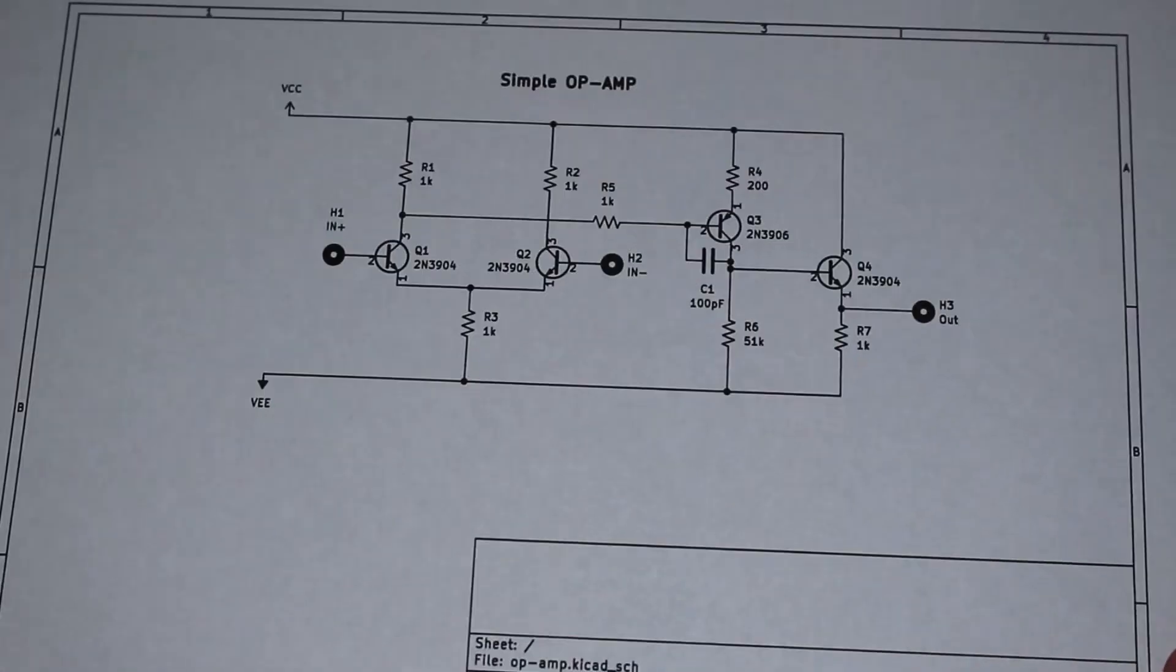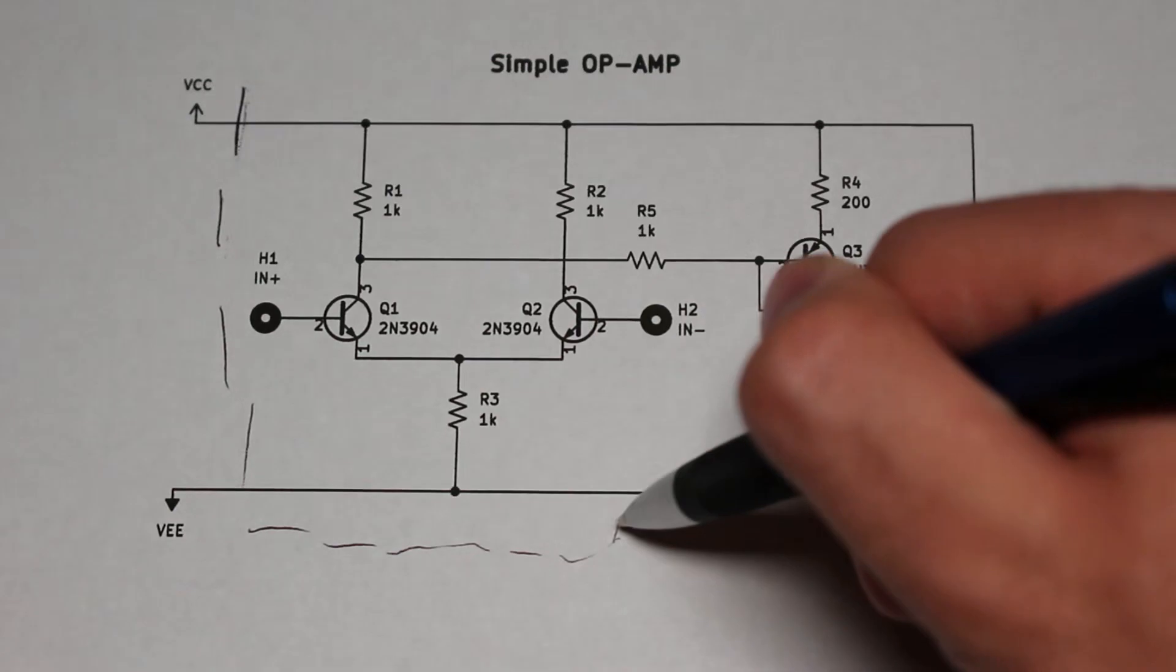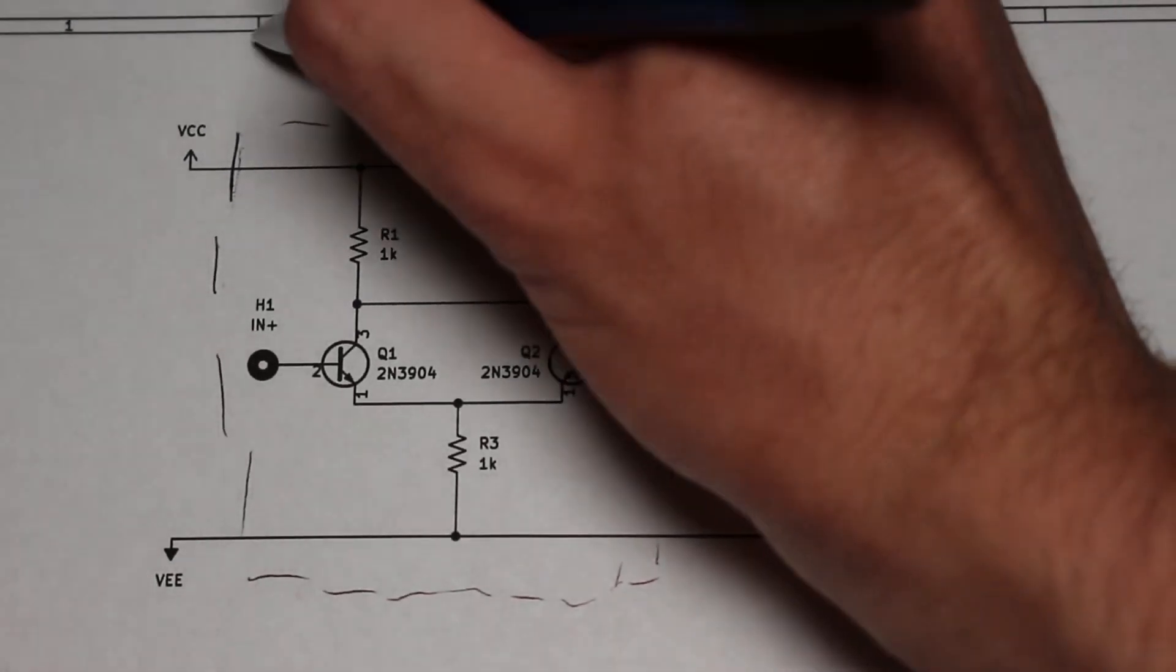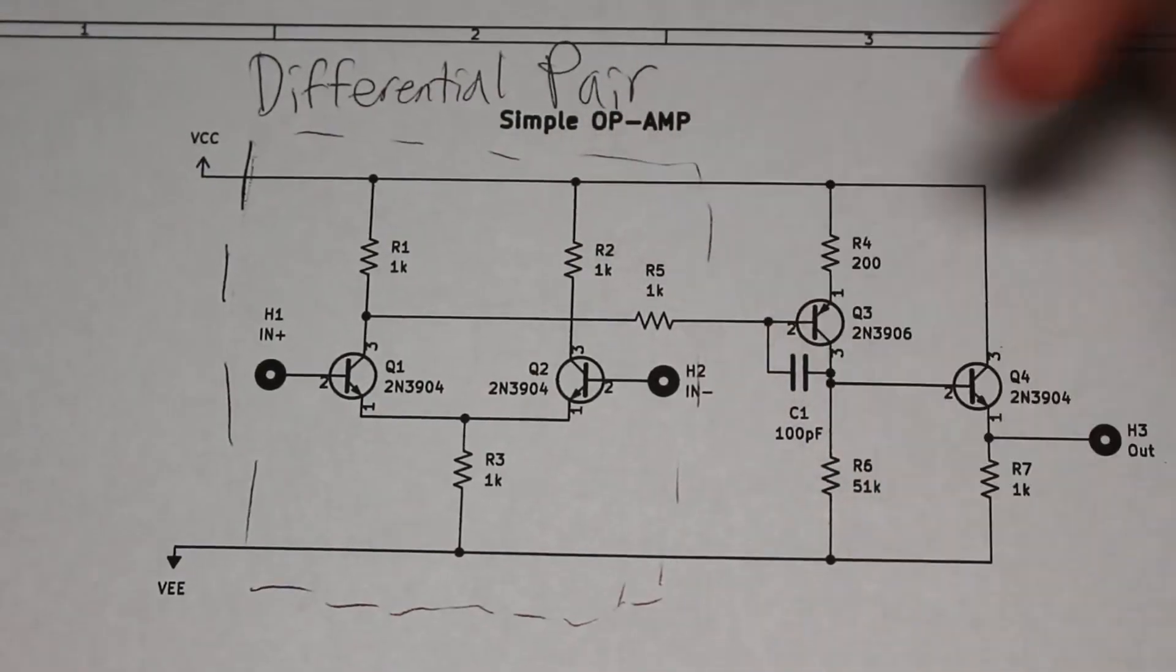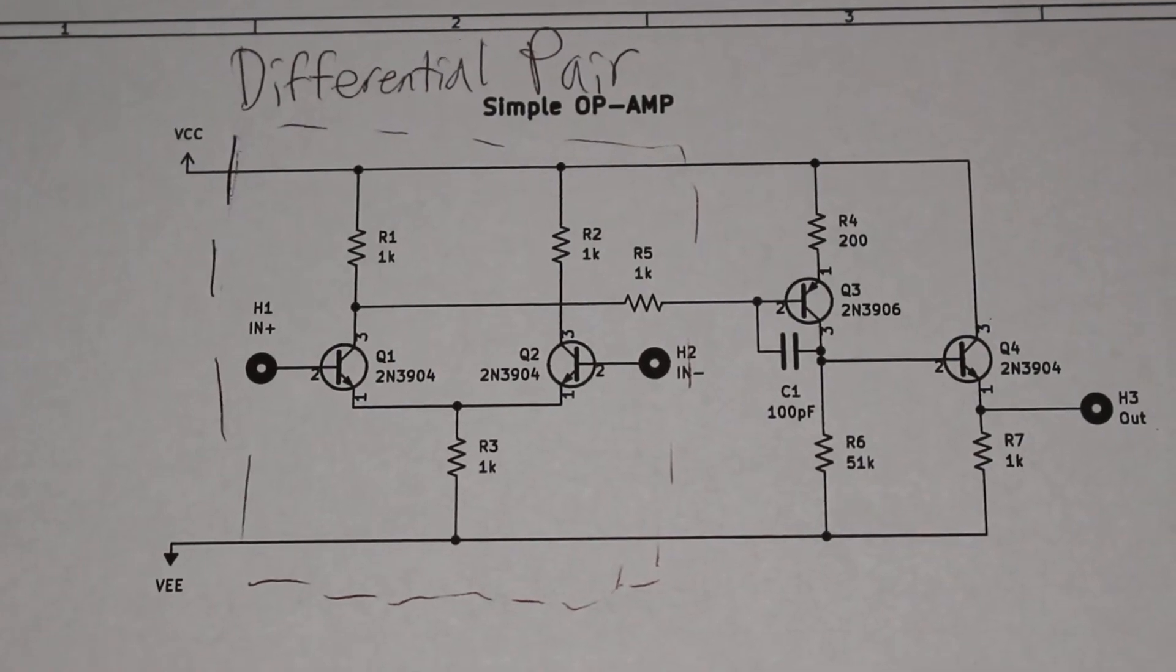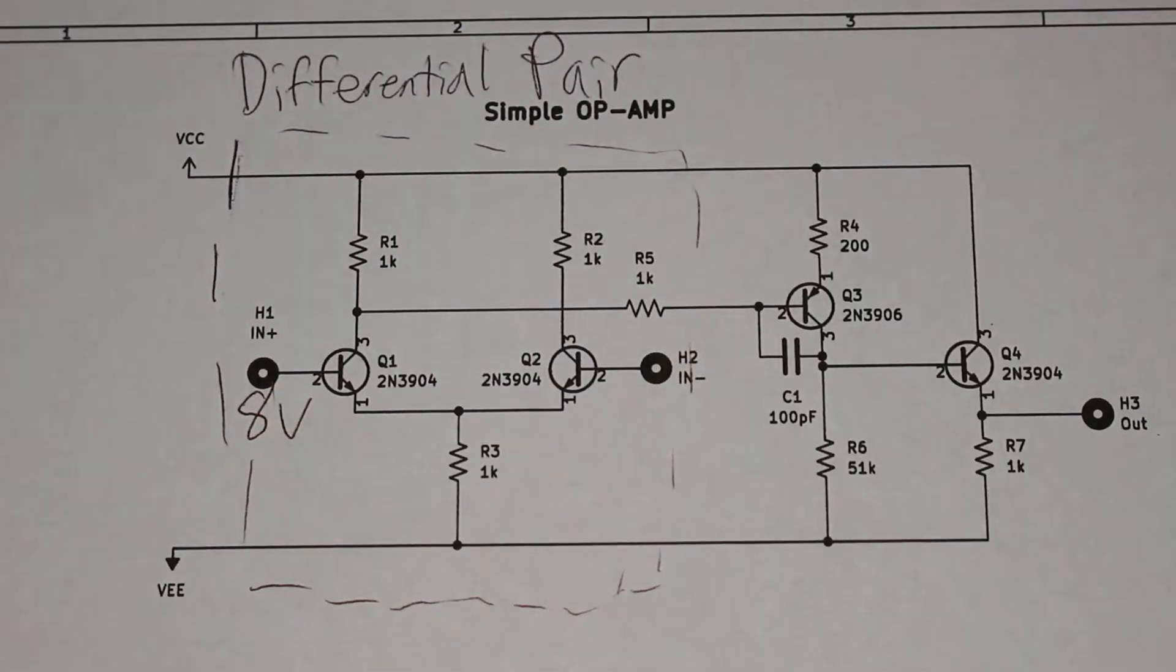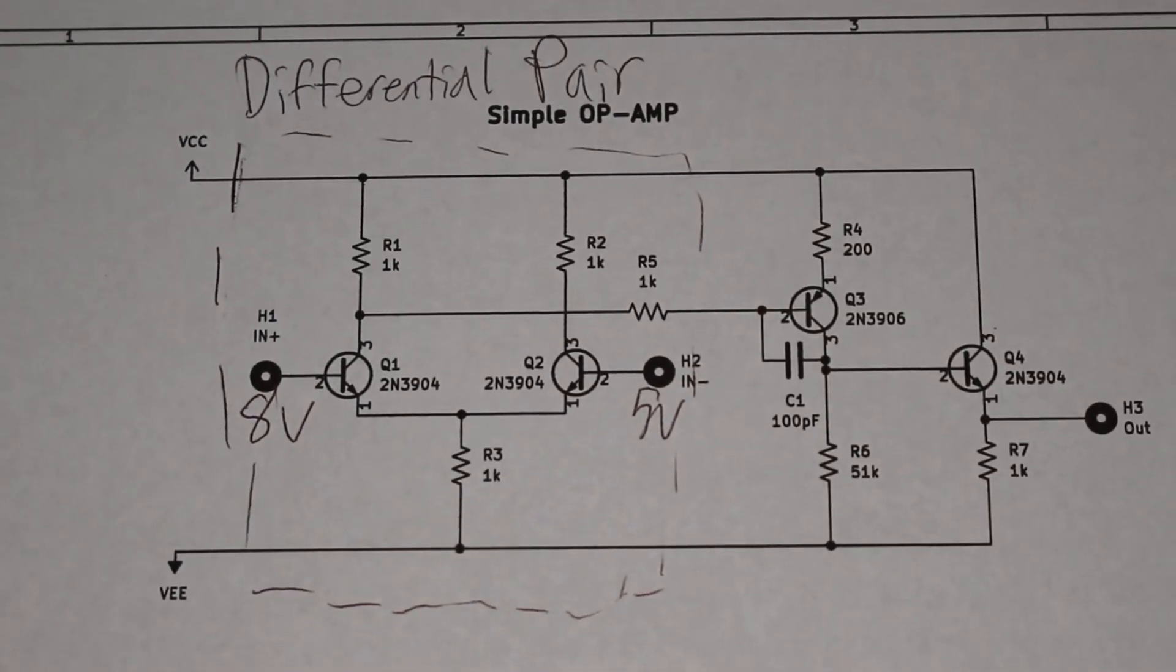It all starts with two NPN transistors and a differential pair. The differential pair here is the heart of the op-amp. The base of each transistor is one of the inputs on the op-amp, and the side that connects to the input is the non-inverting side. Let's give an example in comparator mode. The non-inverting side has 8 volts applied to it, and the inverting side has 5 volts applied to it. So, the output should be as close to the positive supply as it can be.